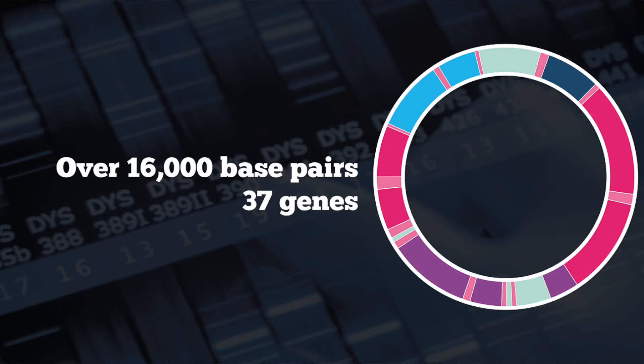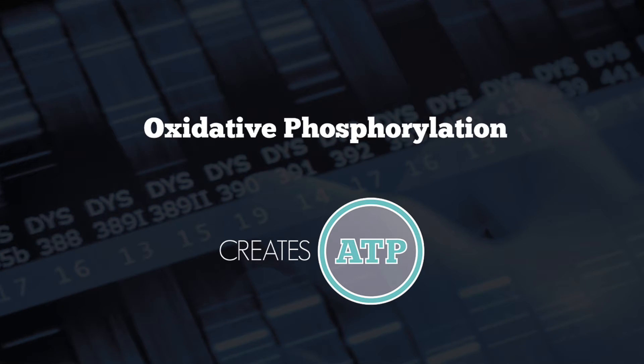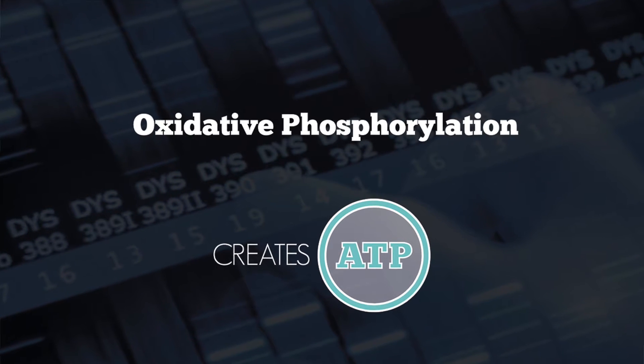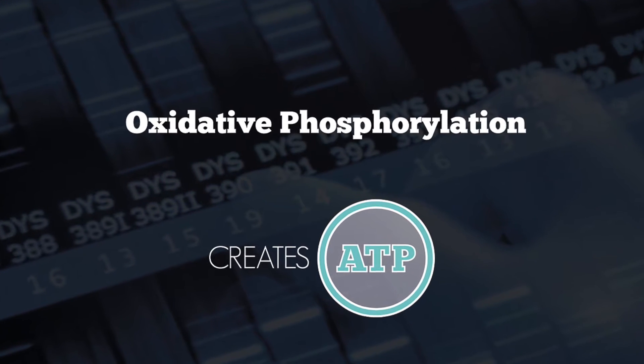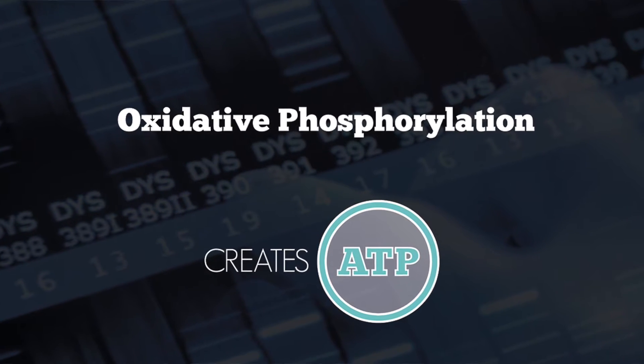Mitochondrial DNA itself codes for over 16,000 base pairs, which is 37 genes. These genes generally provide instructions for making enzymes involved in oxidative phosphorylation — the process of using oxygen and simple sugars to create the cell's main energy source, which is adenosine triphosphate.